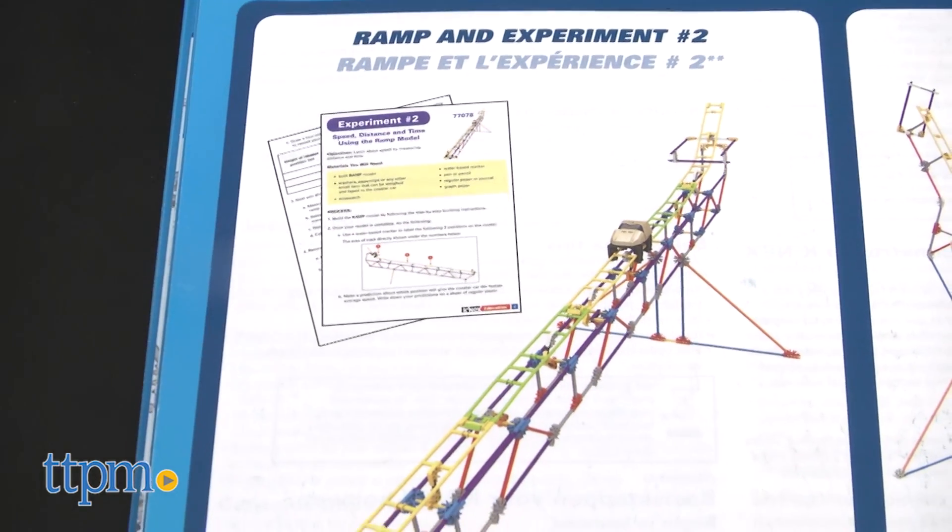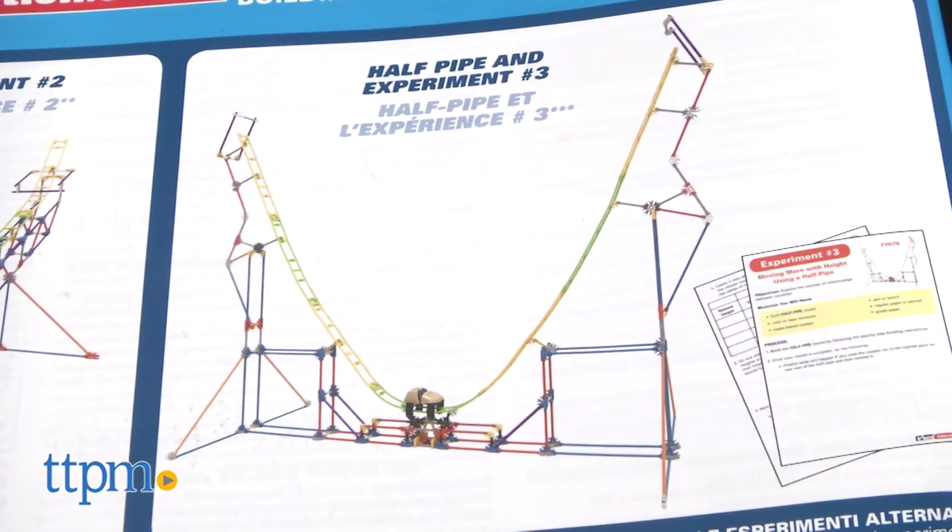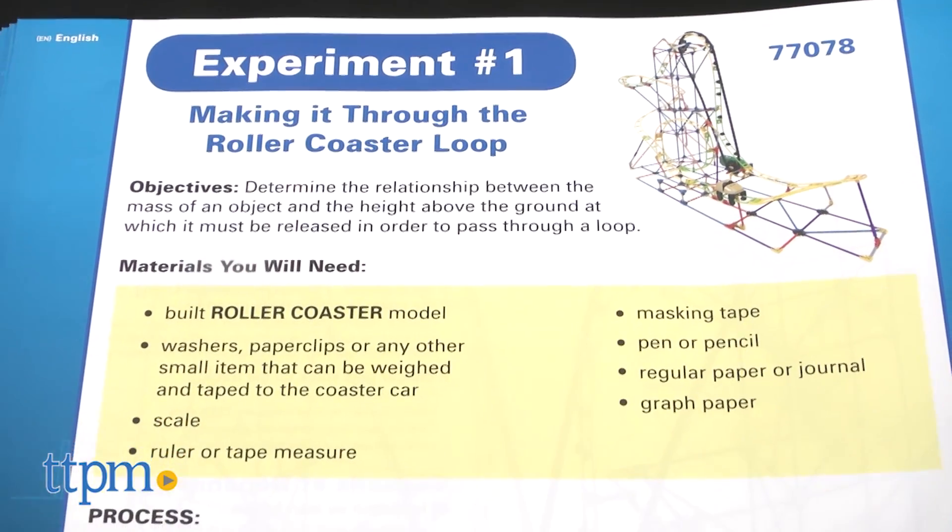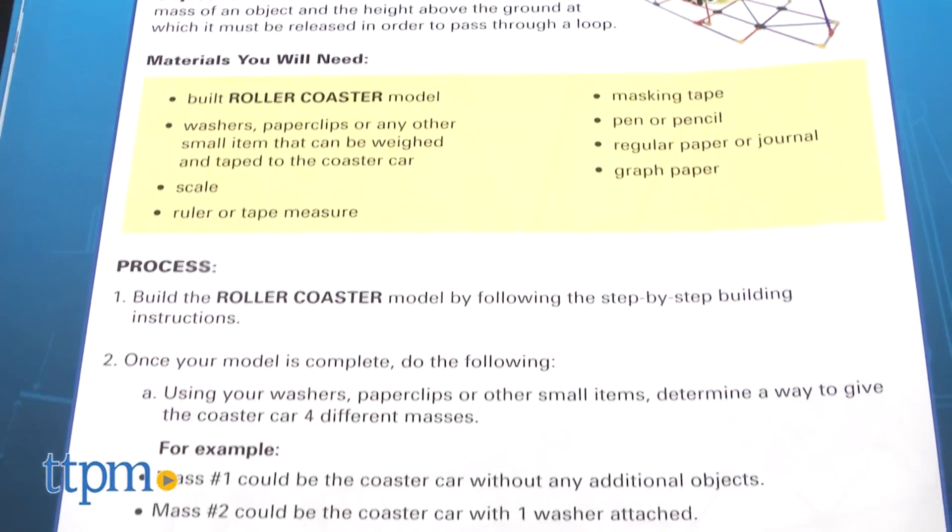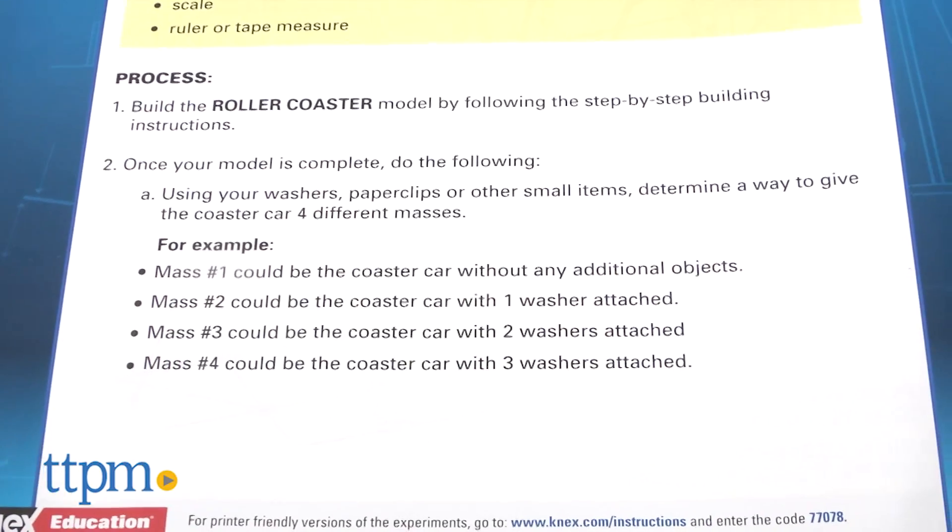Each build must be built one at a time. Each model is accompanied with an experiment. Experiment number one, making it through the roller coaster loop, is the only experiment included in the enclosed guide.